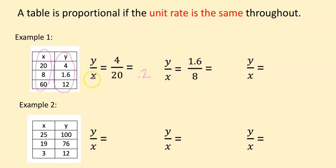All right, the next example, 1.6 divided by 8. 1.6 divided by 8, we get 0.2 again. And then finally, 12 divided by 60. Let's see what we get. 0.2 again.